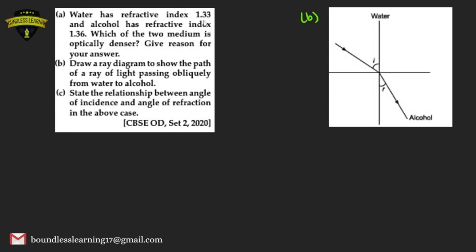Next question: water has a refractive index of 1.33 and alcohol has a refractive index of 1.36. Which of the two is optically denser? The medium with the higher refractive index is optically denser, so alcohol is optically denser. When light passes from water to alcohol, the incident ray bends towards the normal.